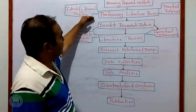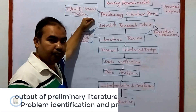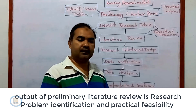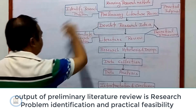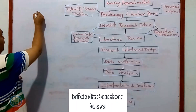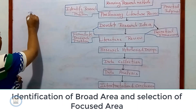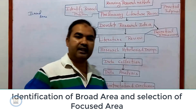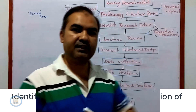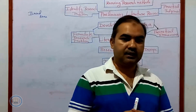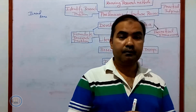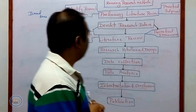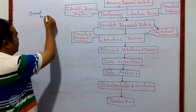The first thing in this process is the preliminary literature review. Preliminary literature review means identifying the subject in which you want to conduct the research — that is your broad area. For example, as a computer science student, if I want to conduct research on wireless networks, then wireless network will become my broad area.